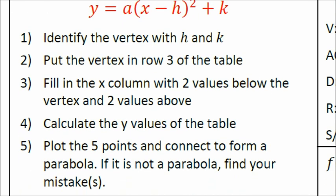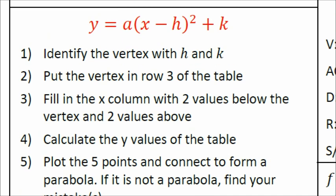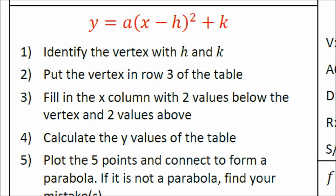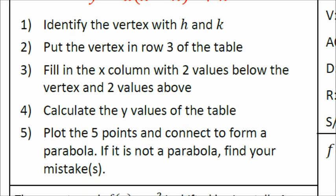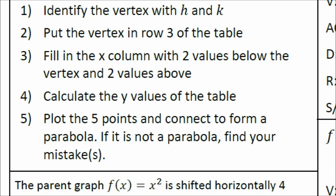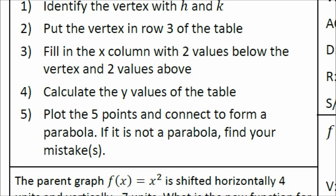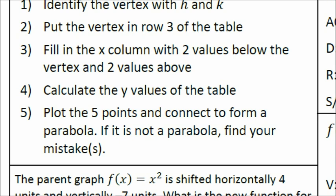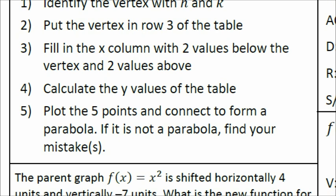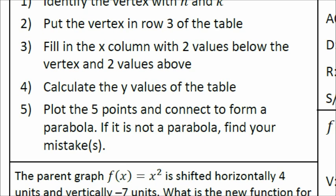Step one: identify the vertex with h and k. Step two: put the vertex in row three of the table. Fill in the x column with two values below the vertex and two values above. Step three: calculate the y values of the table. Step four: plot the five points and connect them to form a parabola.